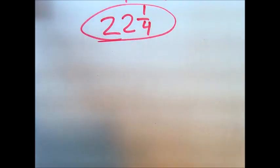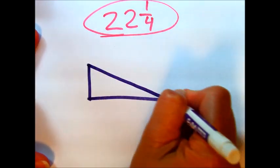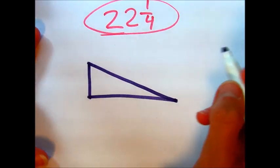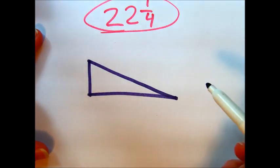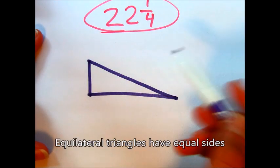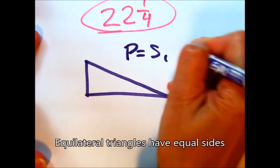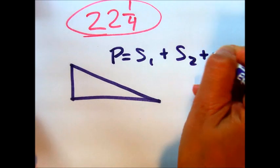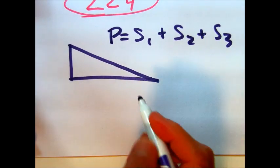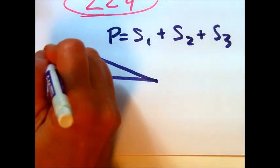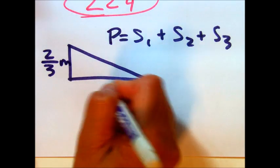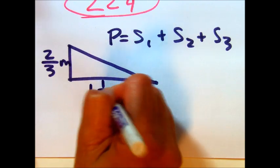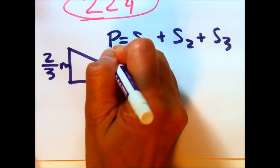I'm going to do one example with a triangle. We know the formula for perimeter of a triangle, or at least a non-equilateral triangle, is going to be side 1 plus side 2 plus side 3. So P equals side 1 plus side 2 plus side 3. We're just going to add up the sides. So I'll go ahead and make up some numbers here. Let's say this is 2/3 meters. Let's say this is 1 1/2 meter. And then we'll say this is 2 meters.